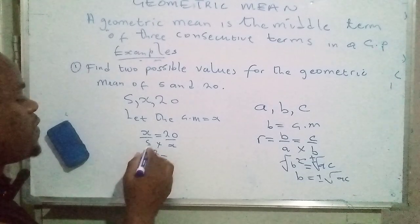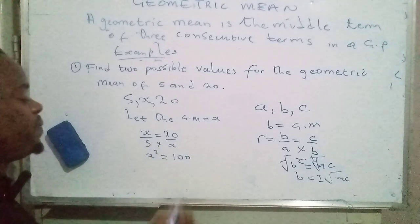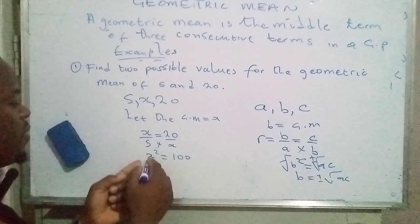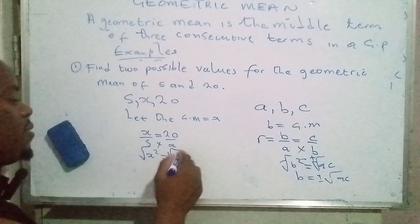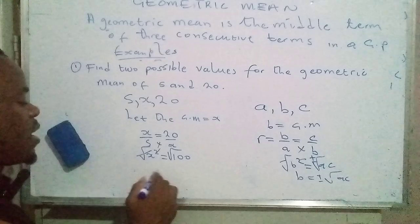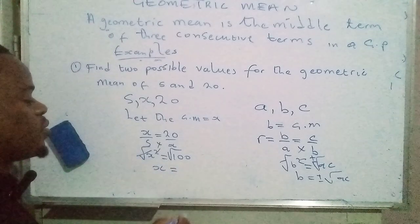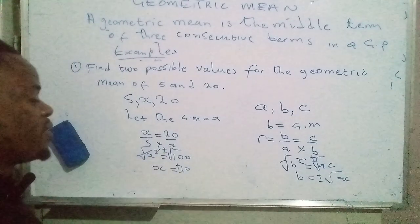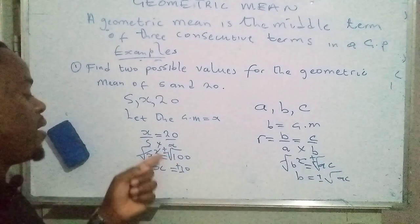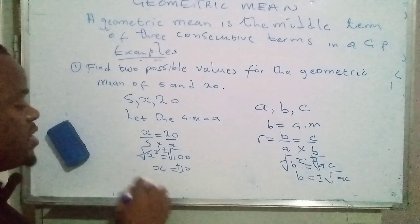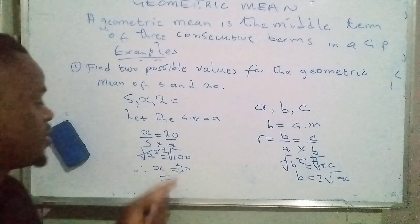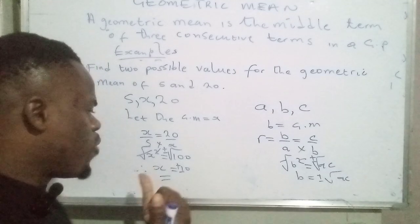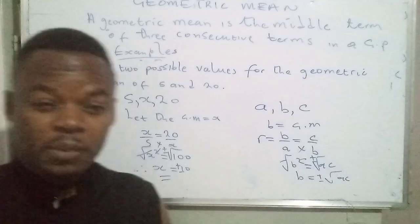which is equal to 5 times 20, that would be 100. From there we find the square root of both sides — that and that cancel — and we have x equals the square root of 100, which is 10. We must indicate plus or minus, so the geometric mean is therefore negative 10 or positive 10.